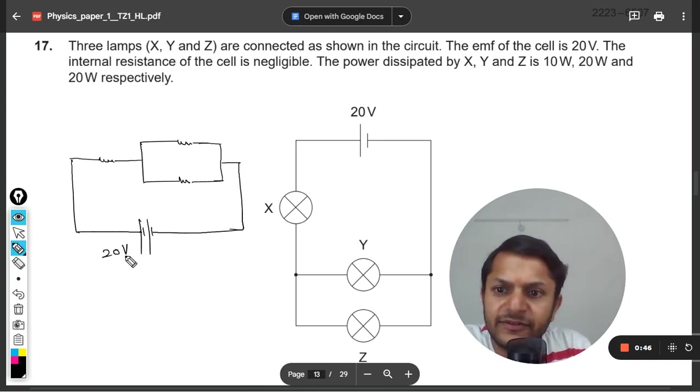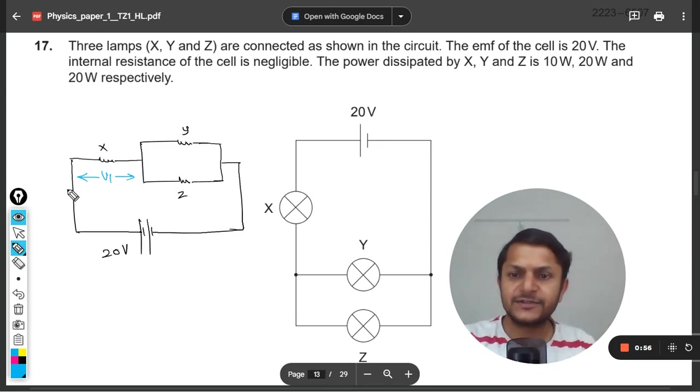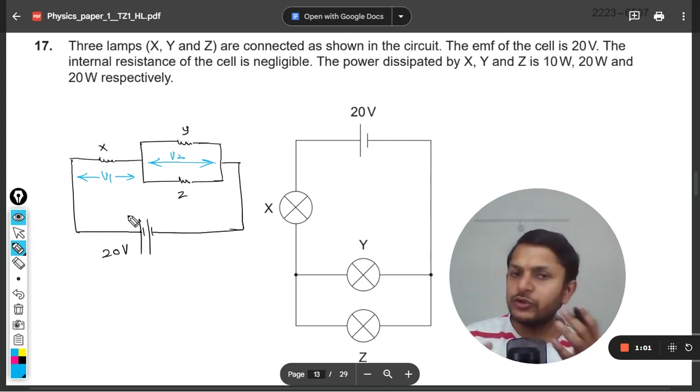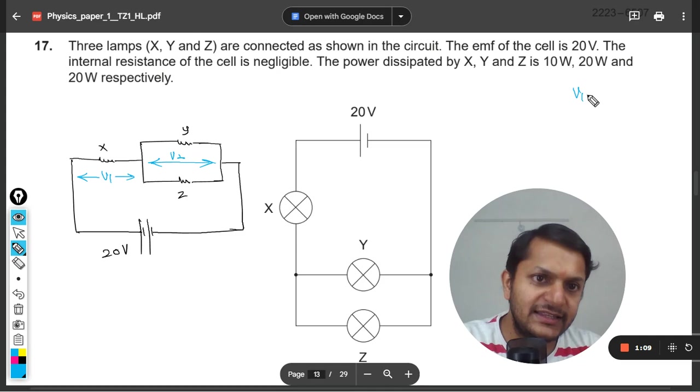And this is given as 20V. This is X, this is Y, and this is Z. So we can assume that V₁ is the potential difference across X, and V₂ is the potential difference across Y as well as Z because both of them are in parallel. So the potential difference across them will be the same. This is assumed as V₂.